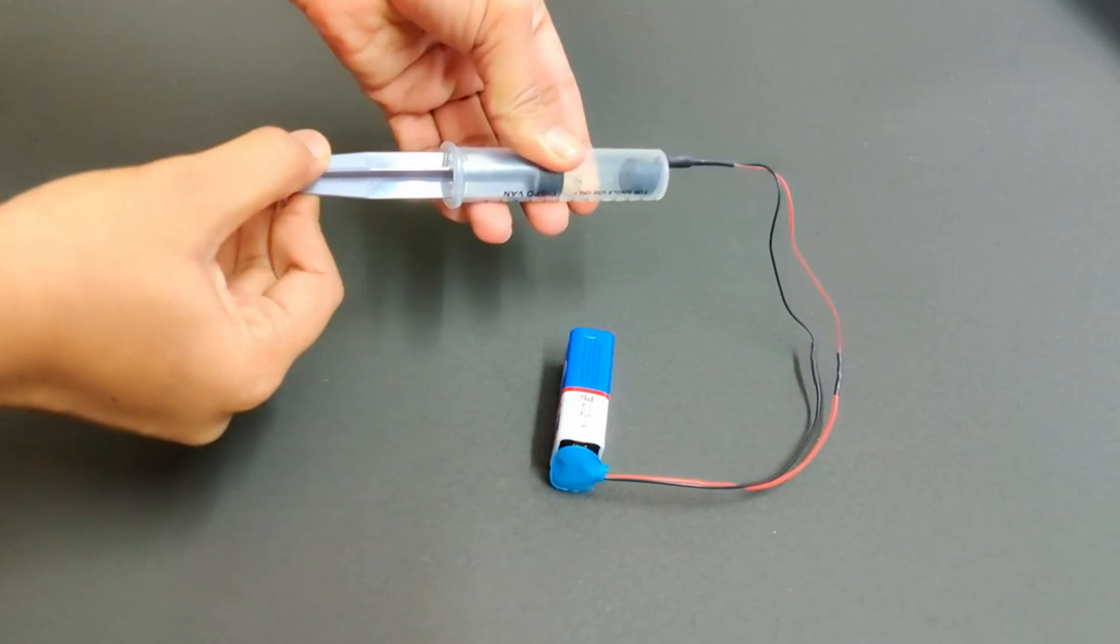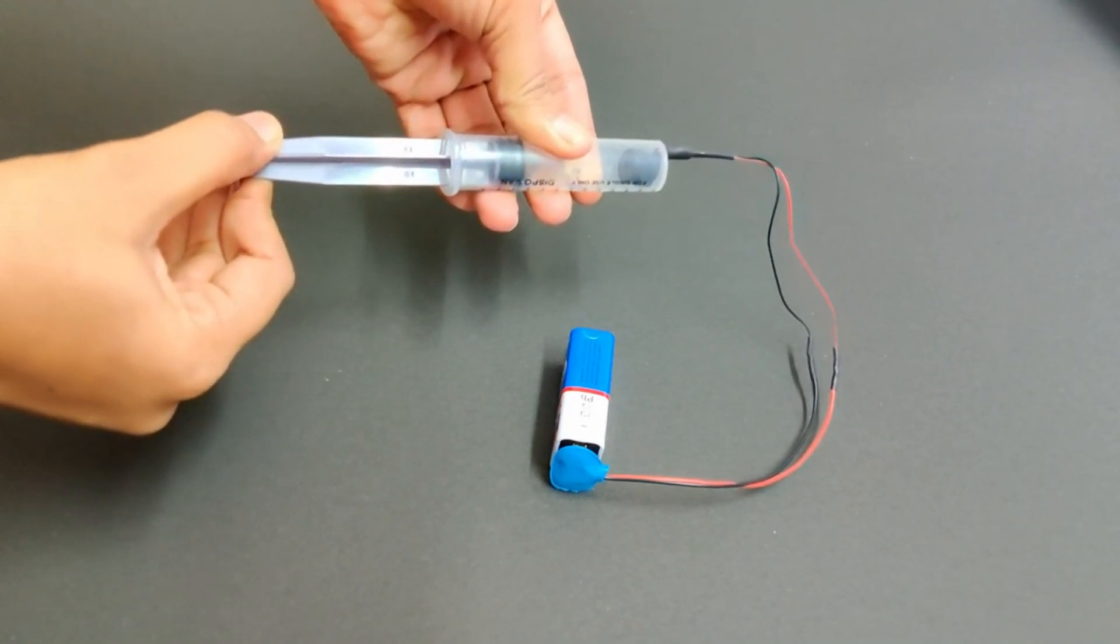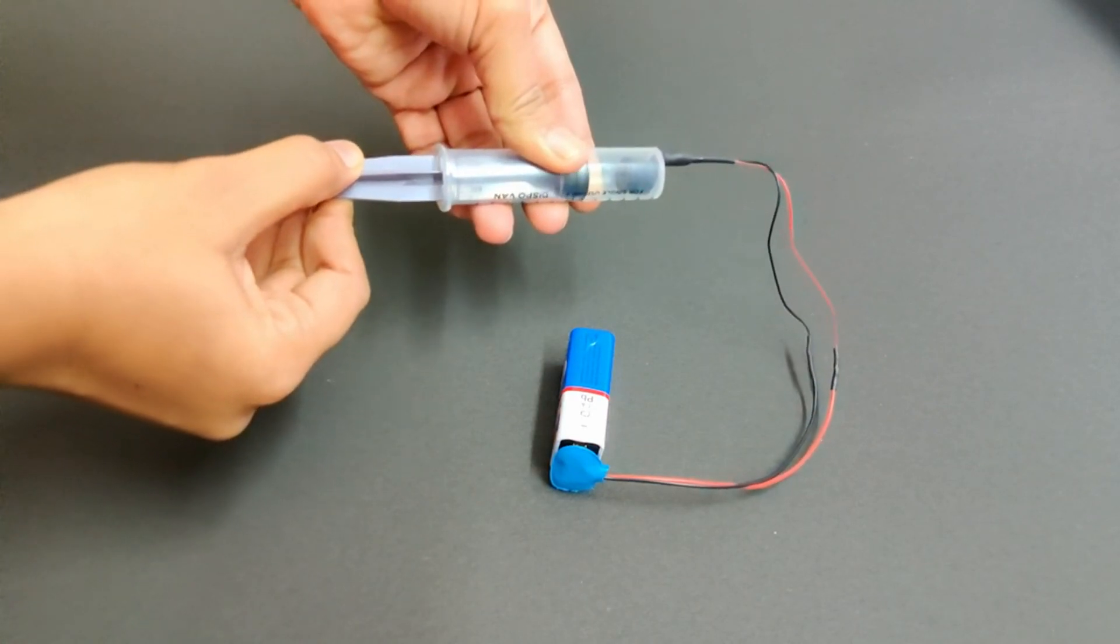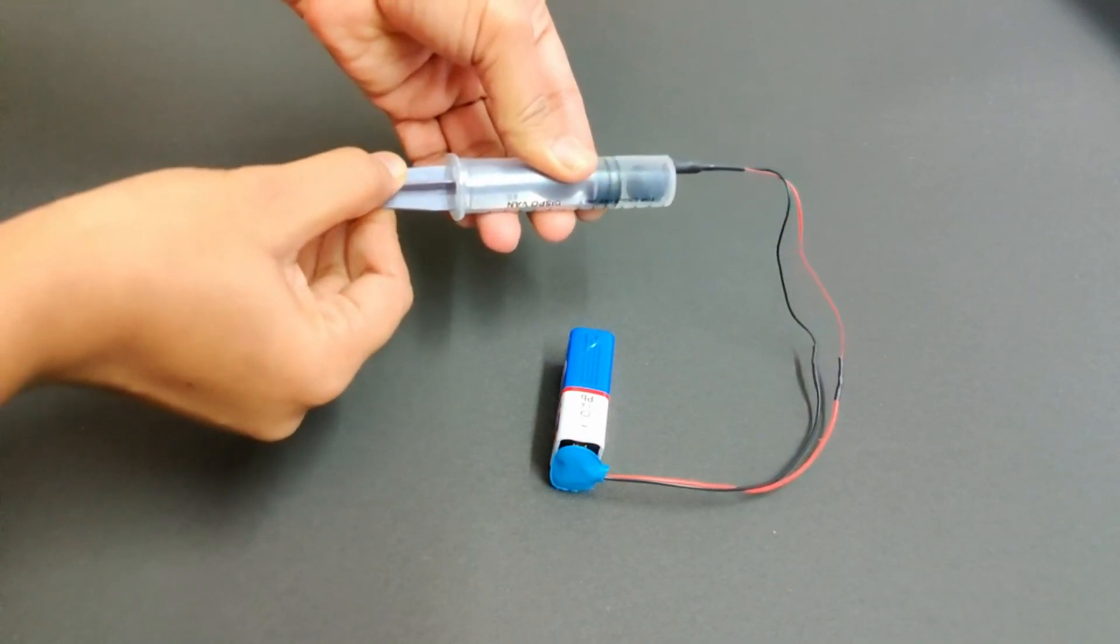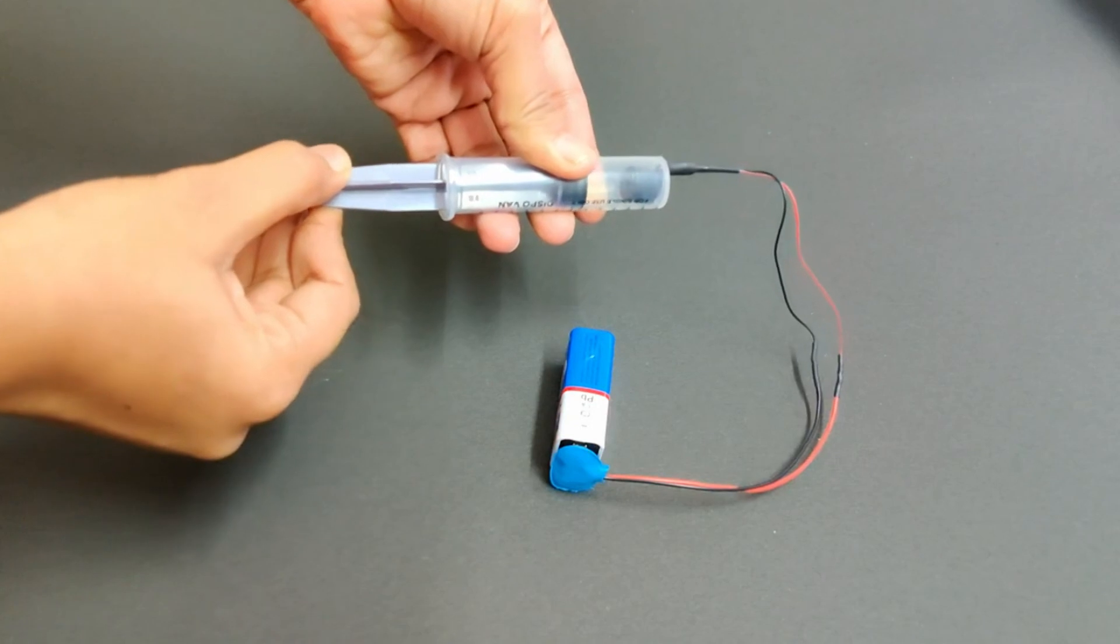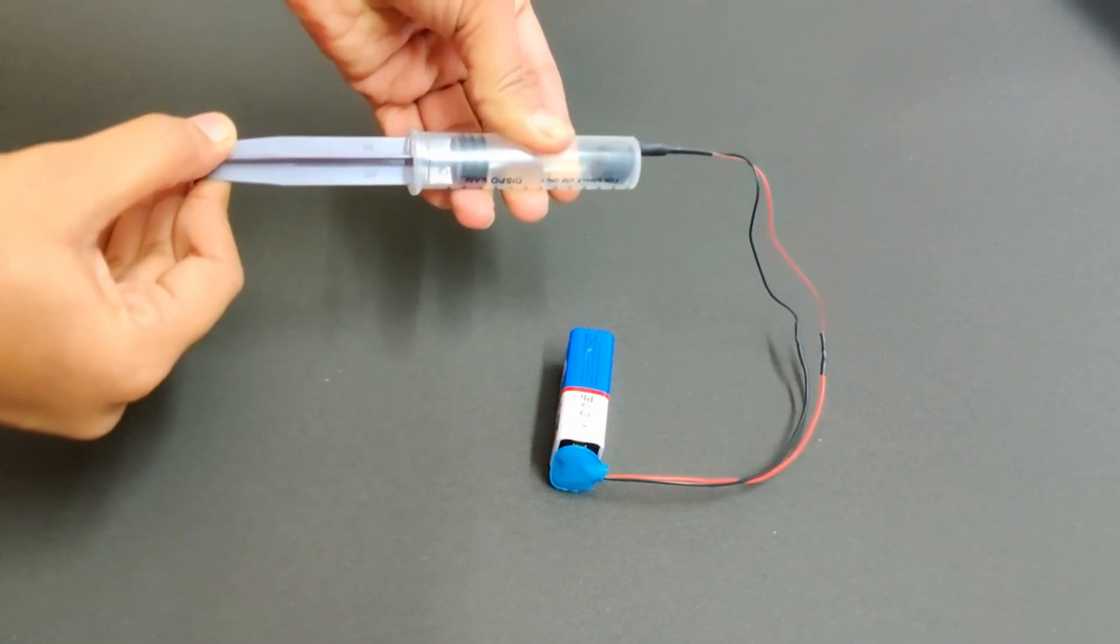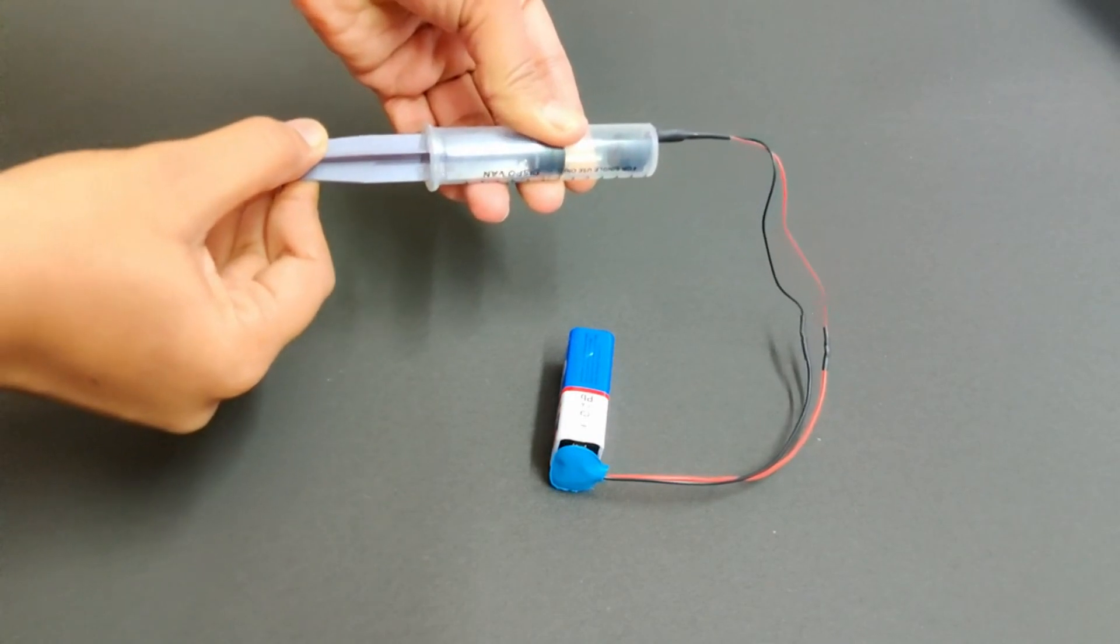As you pull the plunger out, the volume of the syringe cylinder increases. However, air from outside cannot enter through the nozzle, which has been sealed, and the syringe is airtight.